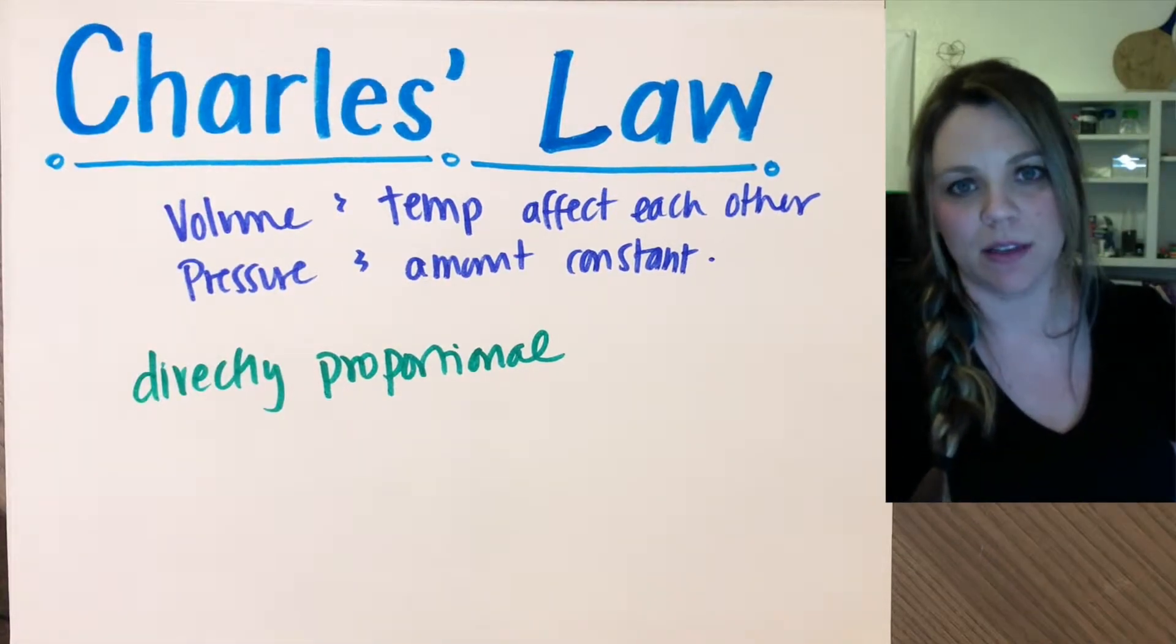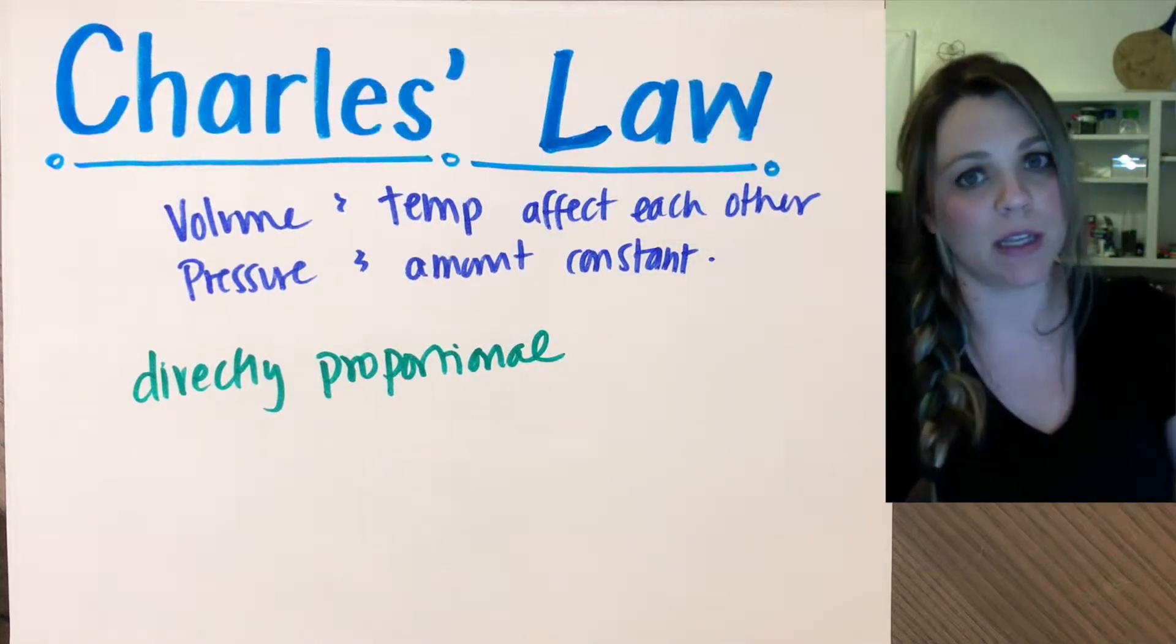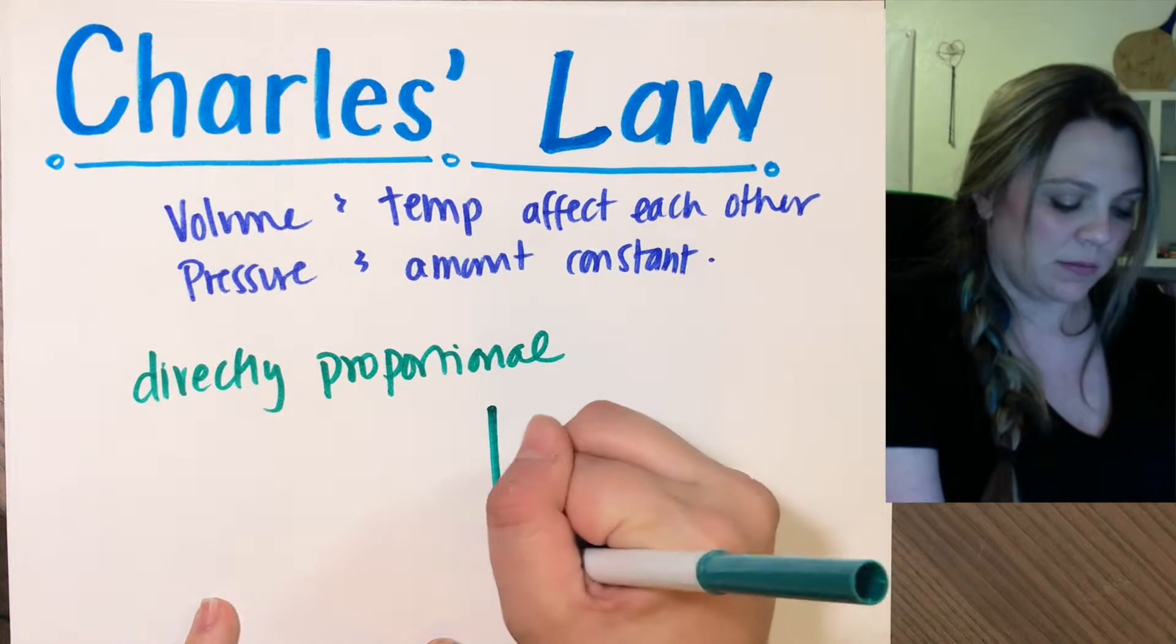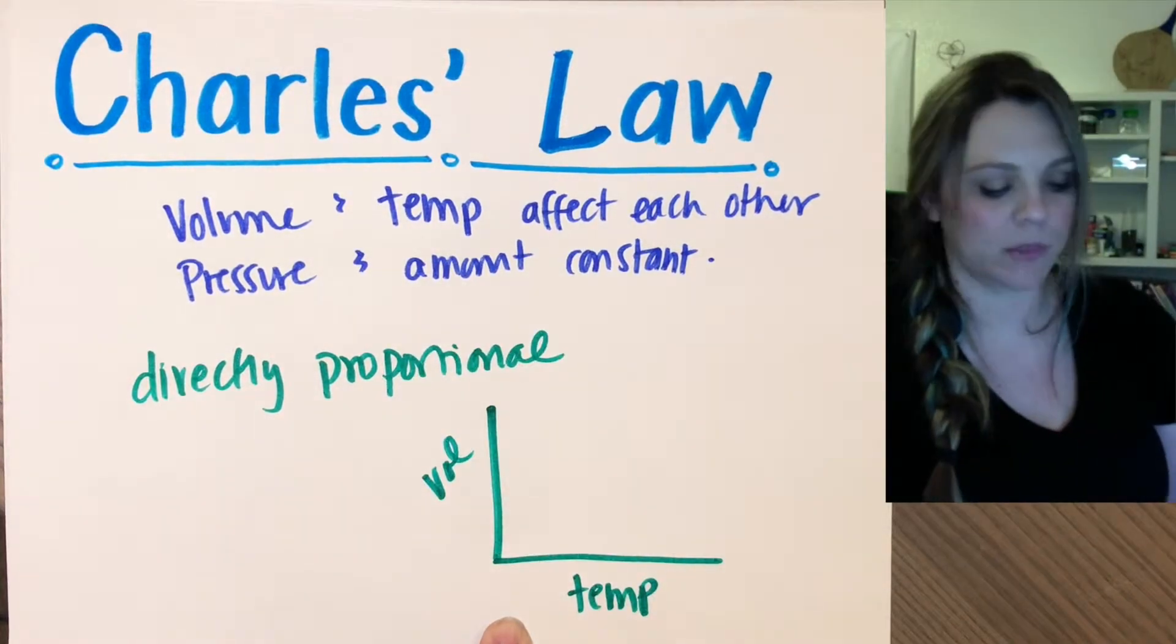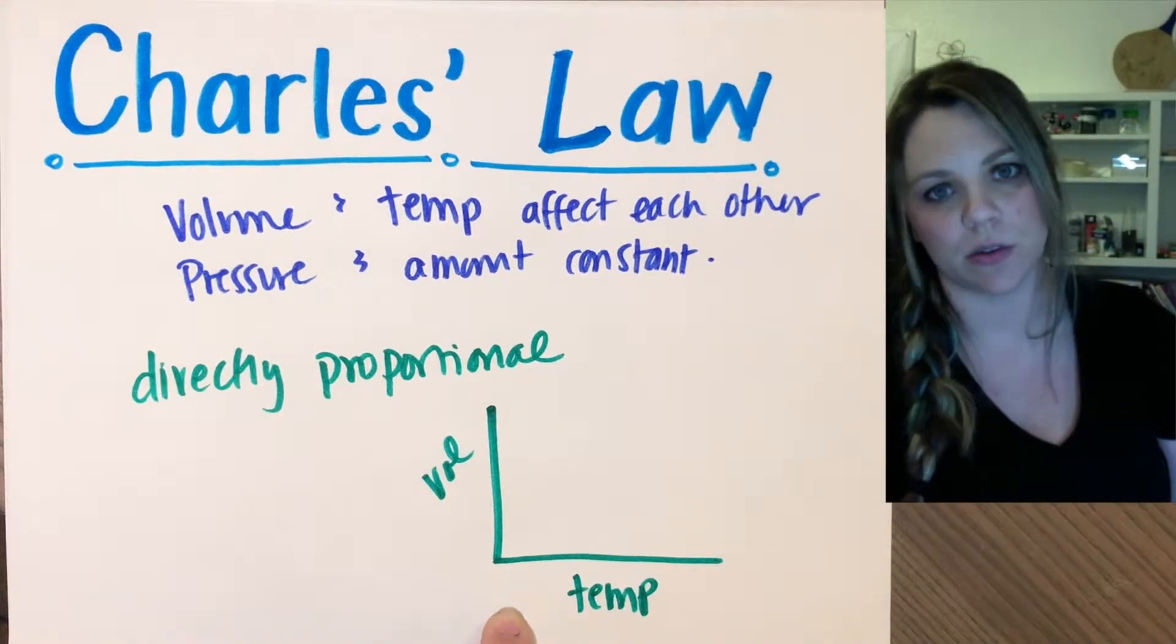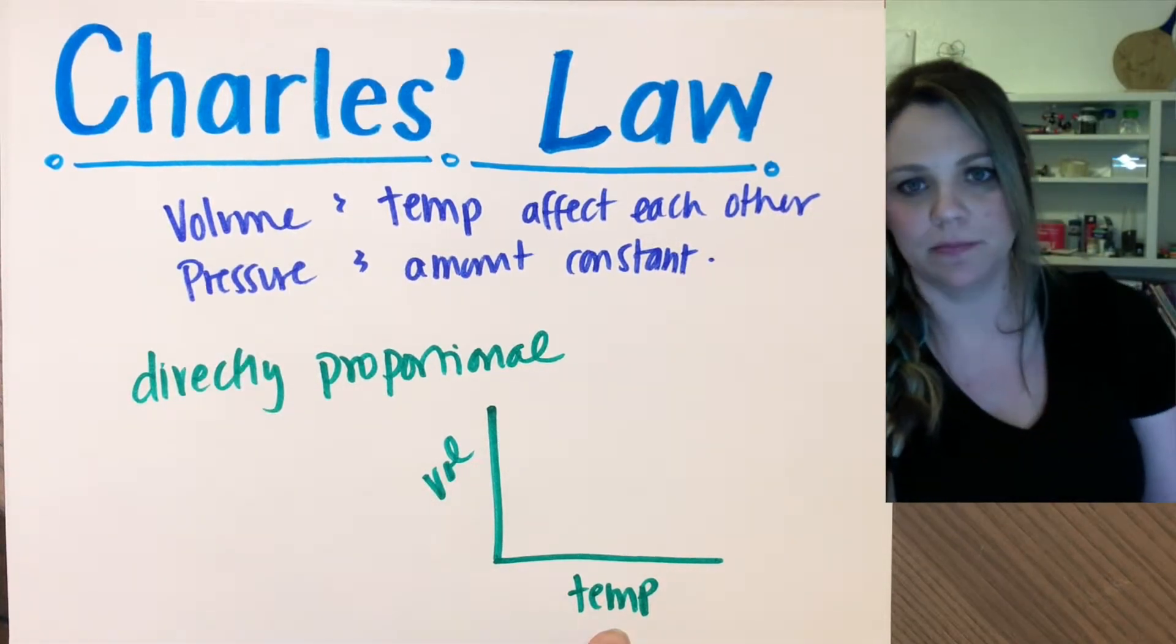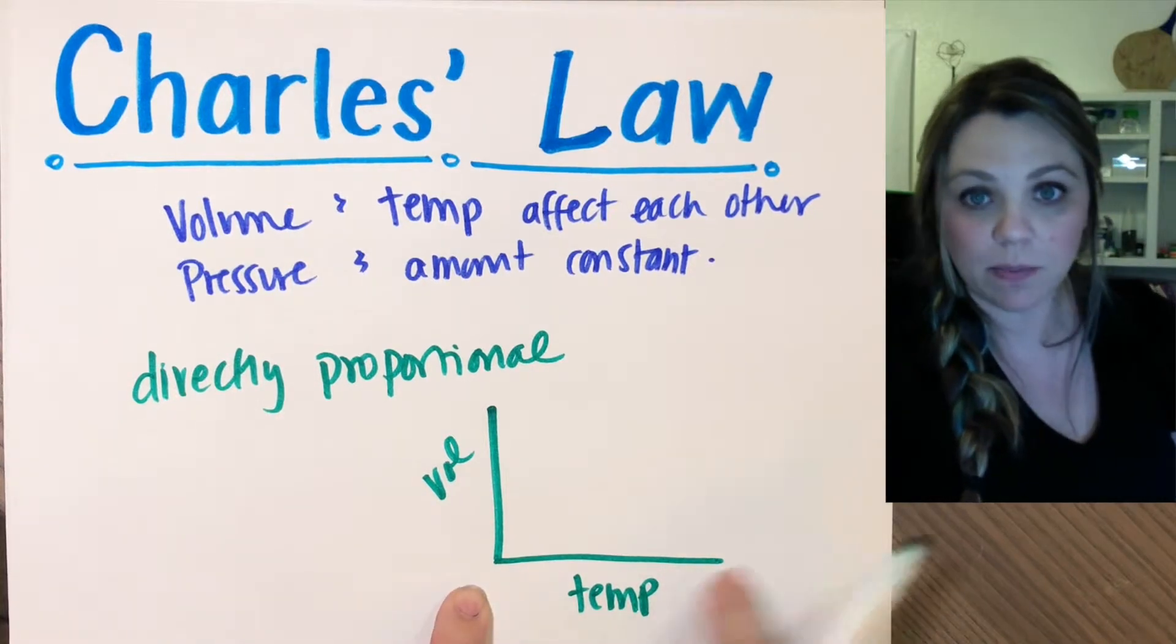Another example: if you put a balloon over something hot the balloon will actually expand, you put a balloon in ice water that balloon will contract and get smaller. Those are all good examples of Charles' Law. The graph would be temperature versus volume - temperature is typically our independent variable on the x-axis, it's really easy to control the temperature, you turn on the stove or put it on ice. Typically the volume is the thing that's affected, your dependent variable. The way this looks is as one thing goes up the other thing also goes up.